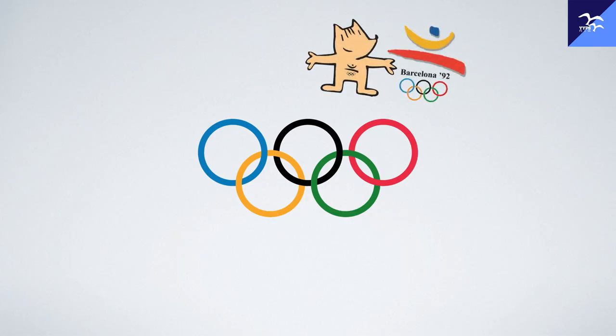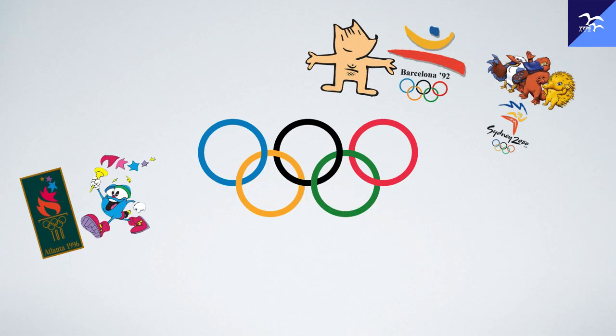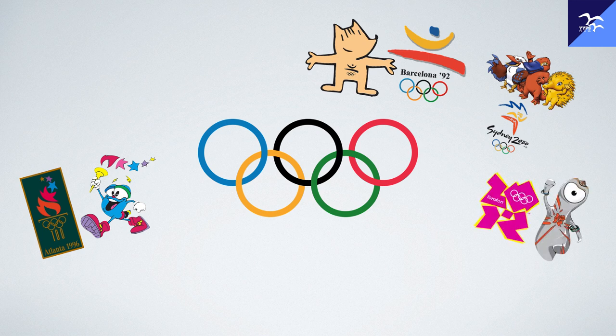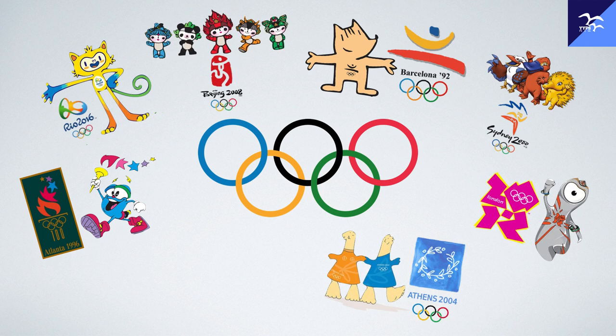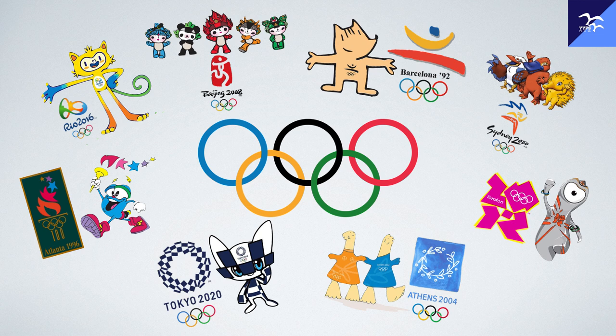Each Olympic Games has its own Olympic emblem and mascot, which are a reflection of the host country's cultures and values. Before the organizing committee or the National Olympic Committee proposes the final designs, they will usually organize design competitions to get inspirations and ideas from the public.